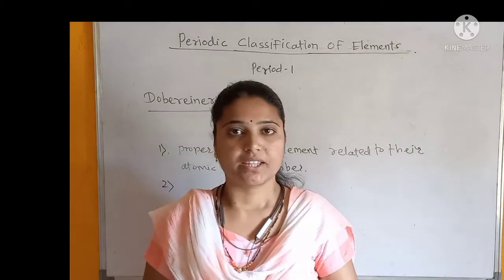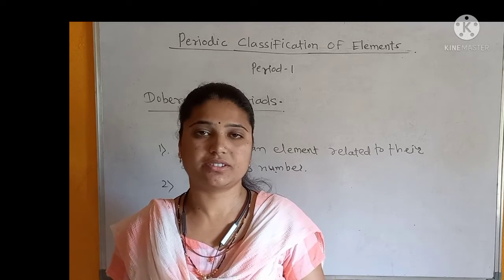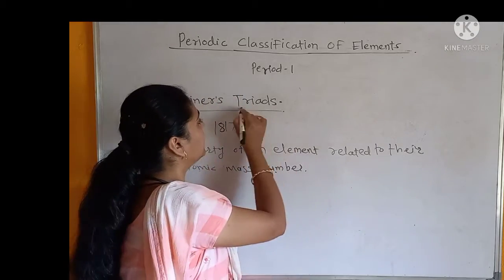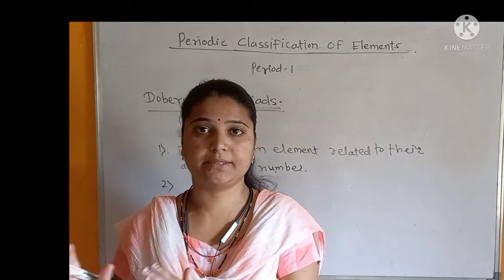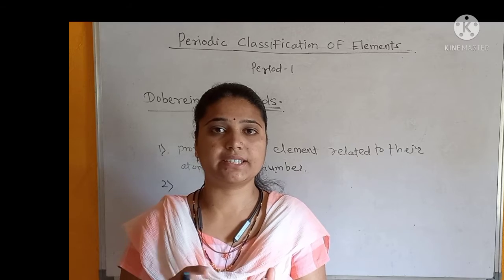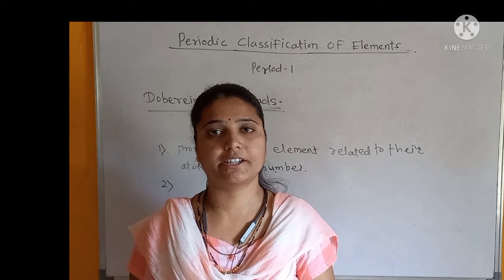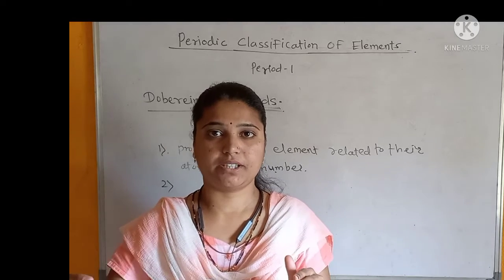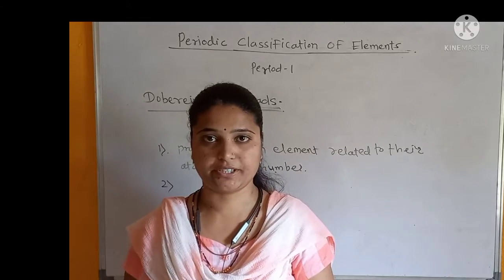The second postulate is that Dobereiner arranged the elements in increasing order of their atomic mass number. 'Triads' means a group of three elements. So Dobereiner made groups of three elements arranged in increasing order of atomic mass number.